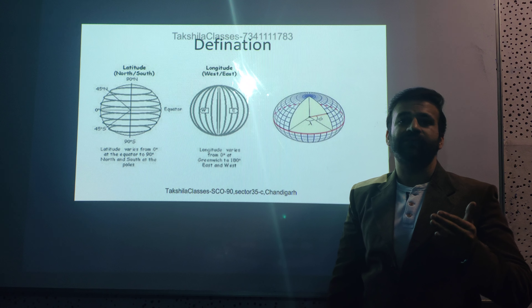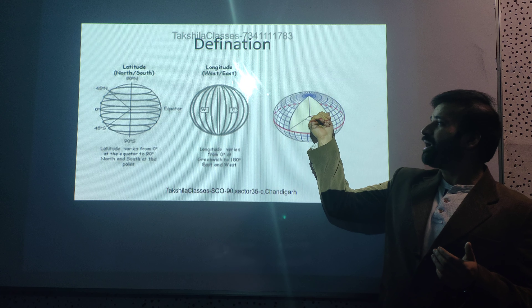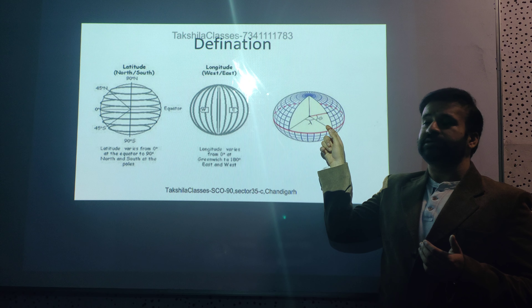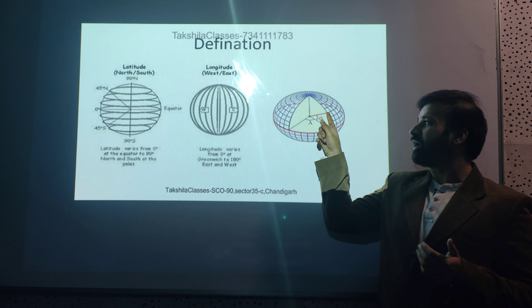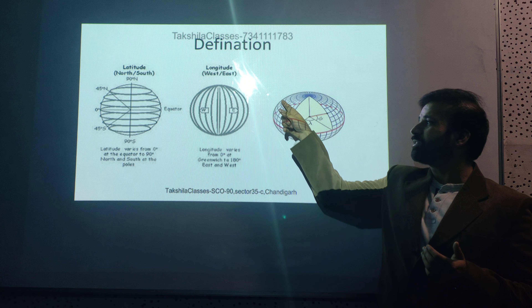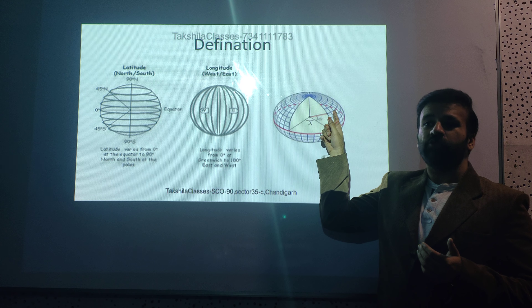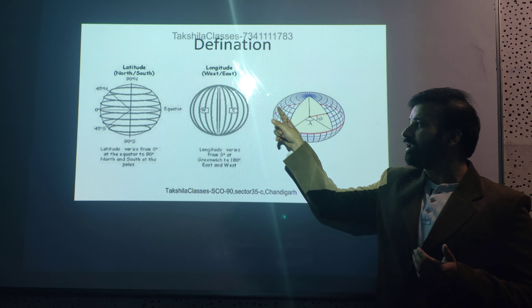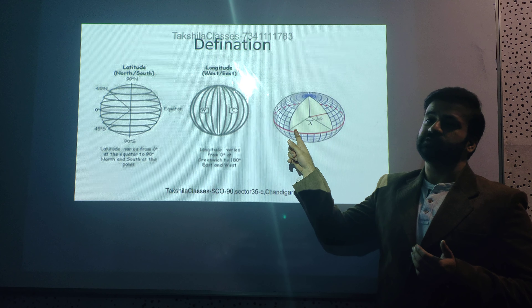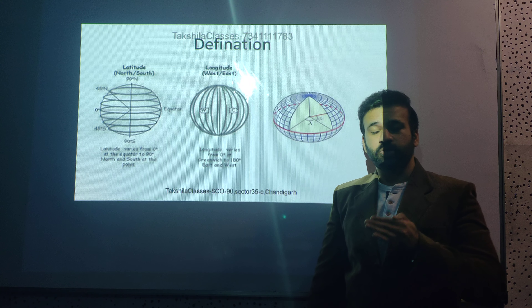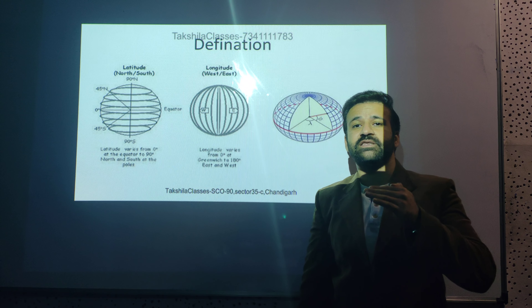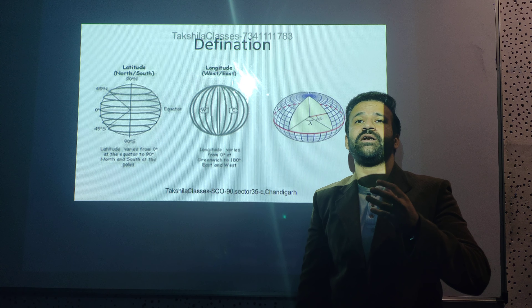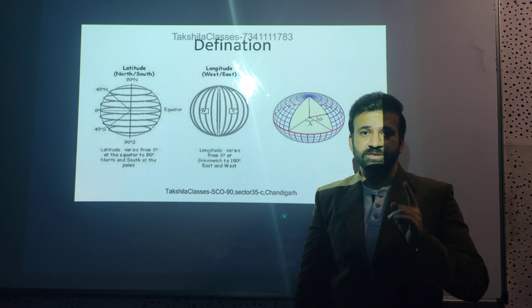From the globe you can see that latitude is basically an angle measured in degrees. For example, 23 degrees, 10 degrees — these are angles made by a place on the surface of the earth with the horizontal plane at the equator. The longest latitude is the equator, and as you go towards the poles, the length of latitudes decreases.